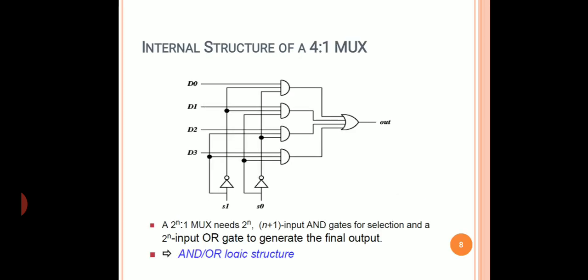For a 4-to-1 MUX there are 4 input lines and 1 output line. Using the formula 2 raised to the number of select lines equals the number of inputs: 2 raised to 2 equals 4, so select lines are 2. S1 is the most significant bit and S0 is the least significant, with 4 input lines D0, D1, D2, D3 and 1 output line. Based on the four conditions of S1 and S0 — 00 selects D0, 01 selects D1, and so on.